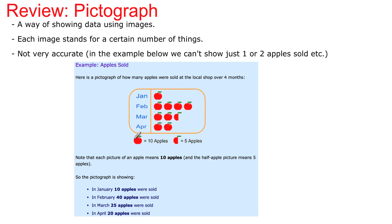Each image stands for a certain amount. In this case, one full apple image represents 10 apples, and half an apple represents 5 apples. This is sales per month. The problem with this is it's not very accurate — it looks nice, but it's not very accurate.